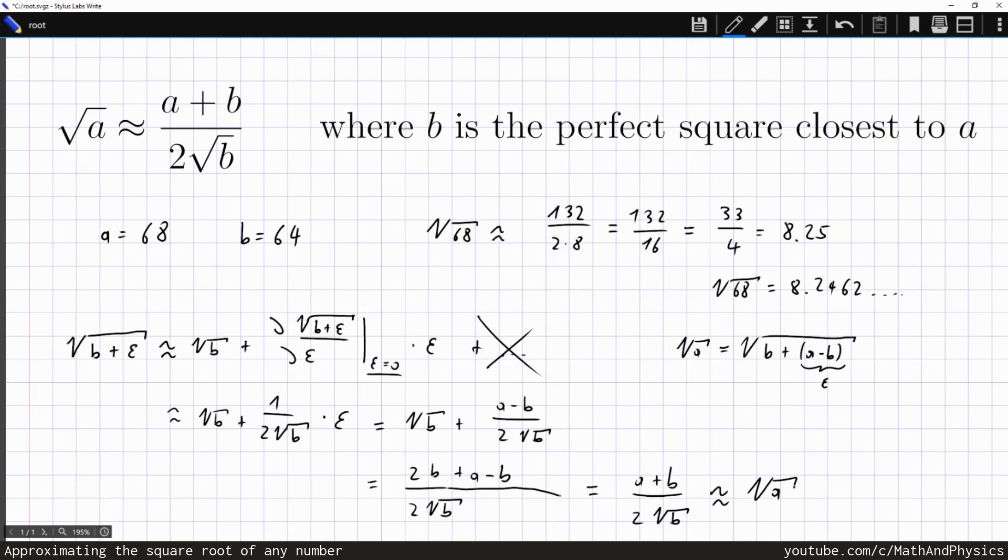So as you can see, this formula is nothing but a linear Taylor expansion of the square root of any number around the closest perfect square, but it's still quite an ingenious idea to expand around the closest perfect square, because that's a number that you can easily compute the square root in your head. So you get a really simple expression that gives an astonishingly good result.